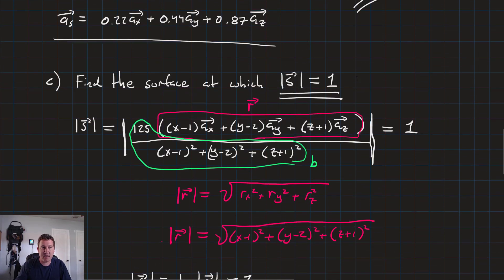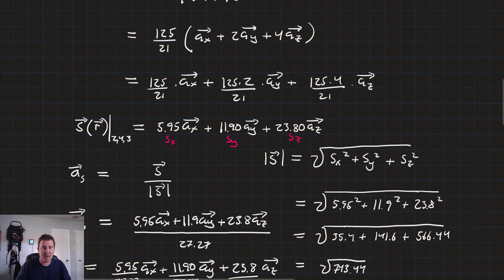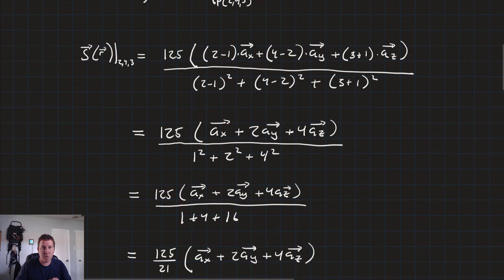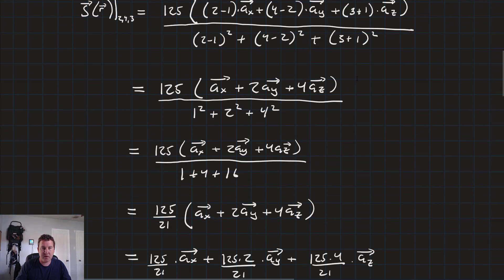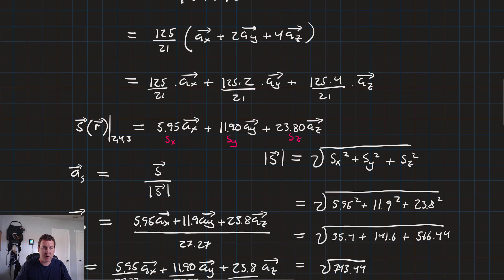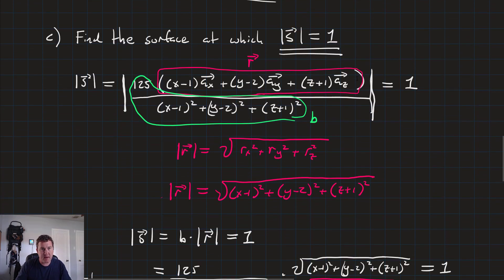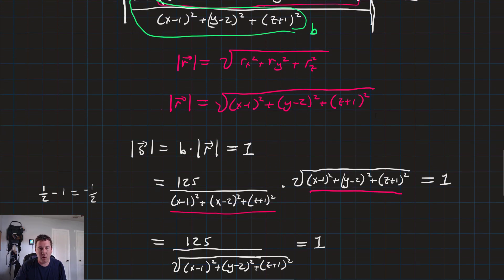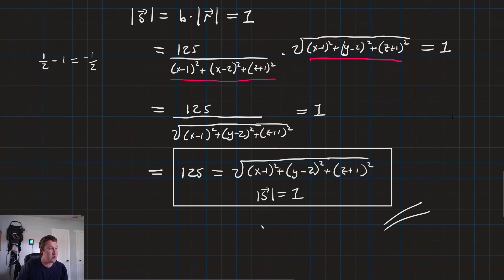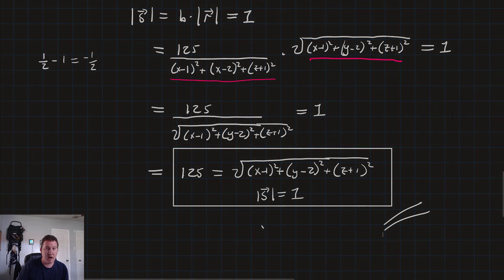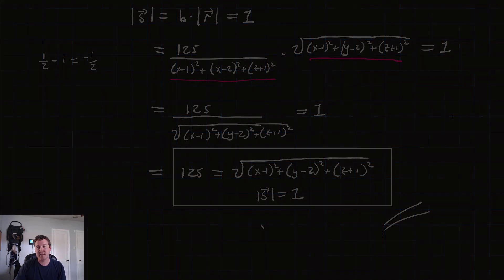That's it for this lesson. In this lesson, we looked at how to take a vector field and at a given point coordinate find out what the vector is. Then we took that and found its unit vector by finding the magnitude and dividing the vector by the magnitude. And then we used the vector field to find a surface at which the magnitude of S was equal to 1. As always, if you have any questions please let me know, and I'll see you in the next lesson. Thank you.